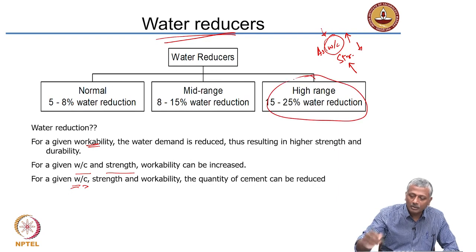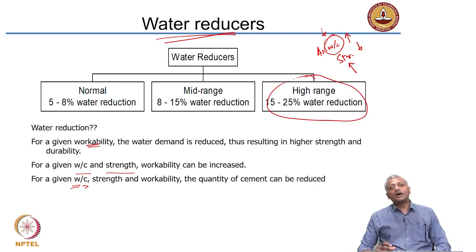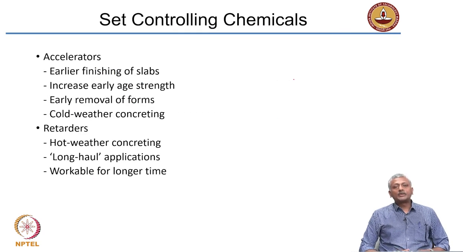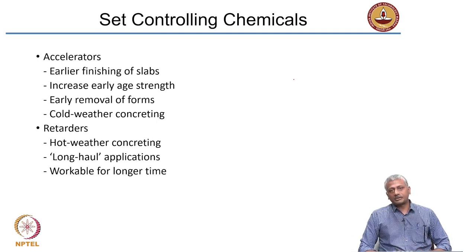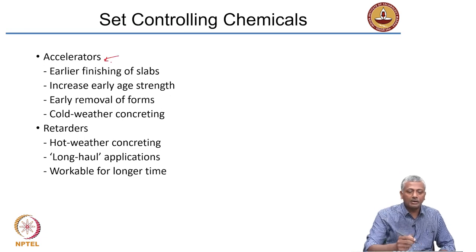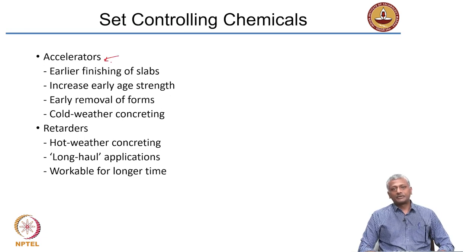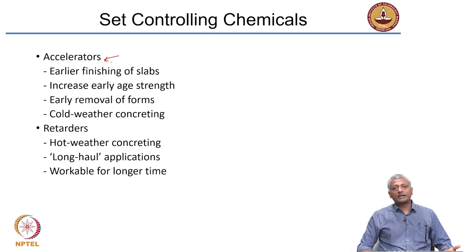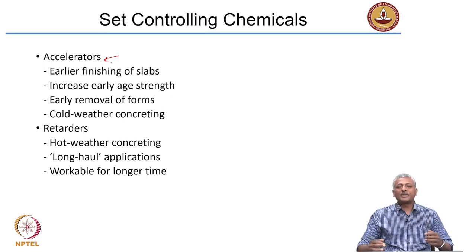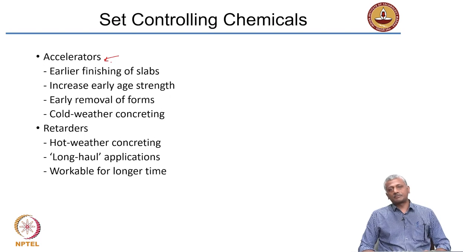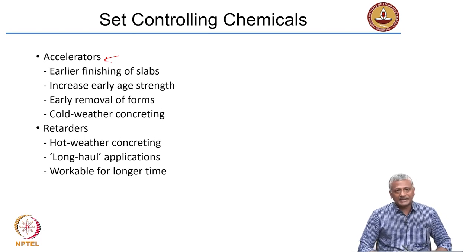High range water reducers can really bring down the cement content required to attain a specific type of concrete. You can also use chemicals that speed up or slow down the reaction depending on conditions. When you speed it up, they are called accelerators — when you want to get strength faster or are working in a cold region like Kashmir where cold climate causes the setting to happen very slowly or water may even freeze, you use accelerating admixtures.